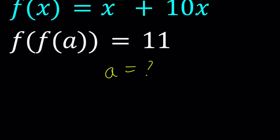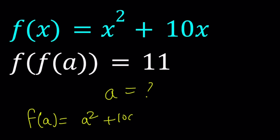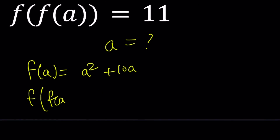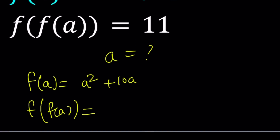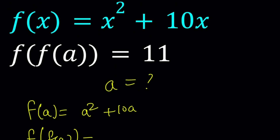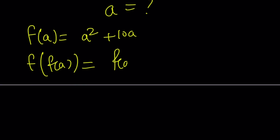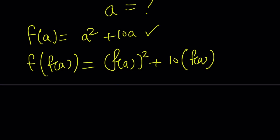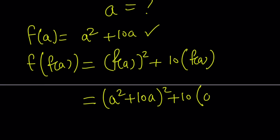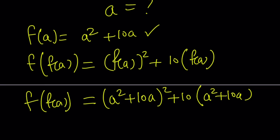Let's take a look at something that will complicate things. So f of a by definition is going to be a squared plus 10a. Since I'm trying to find f of f of a — if I didn't know f of a and just directly evaluated f of f of a — I would replace x with f of a, which gives me f of a squared plus 10 times f of a. But I do know what f of a is, so I can plug it in: replace f of a with a squared plus 10a, then square it, multiply by 10, and add to get f of f of a. And this is equal to 11.